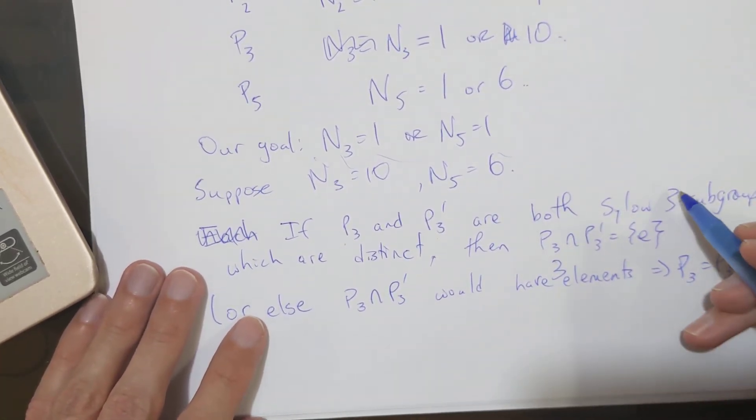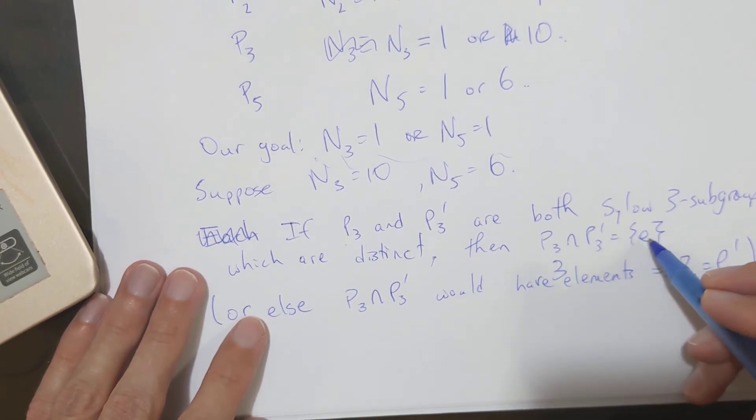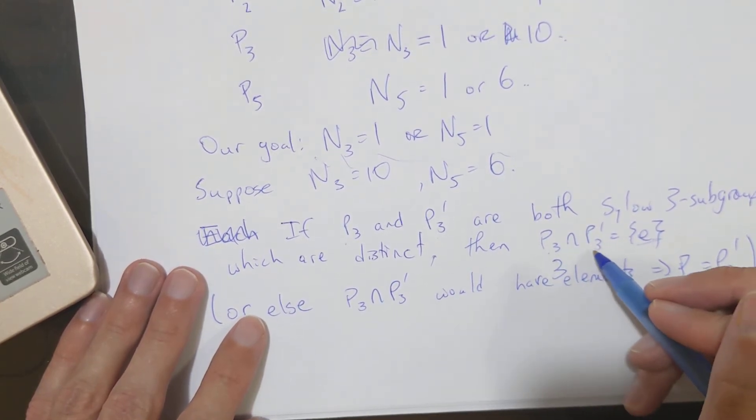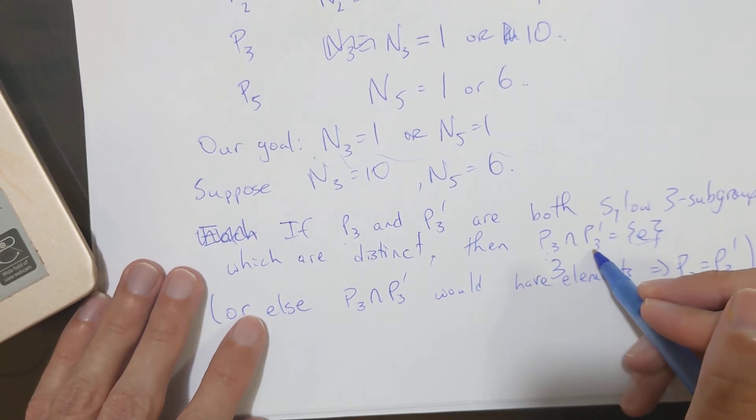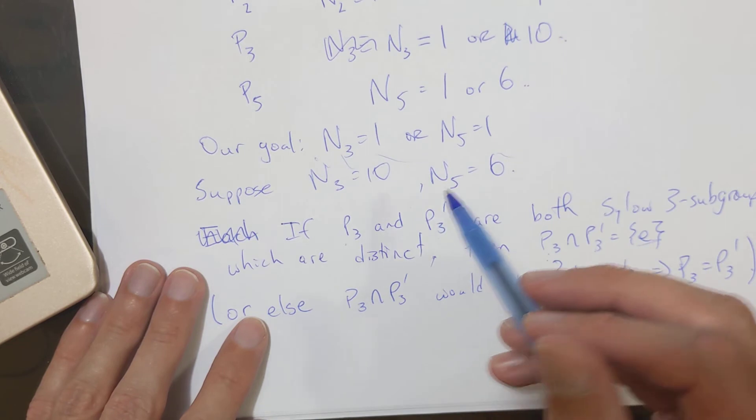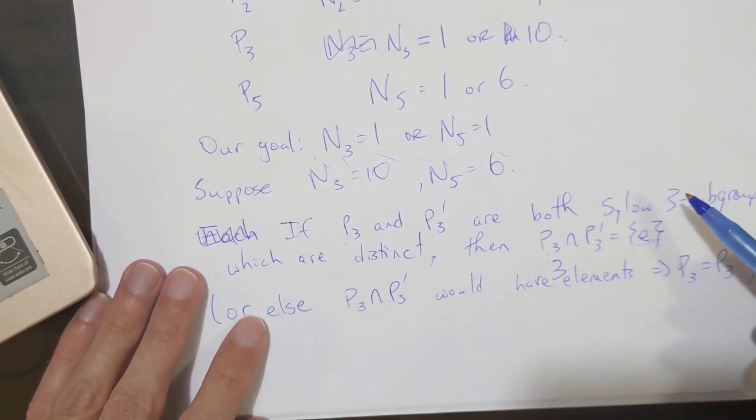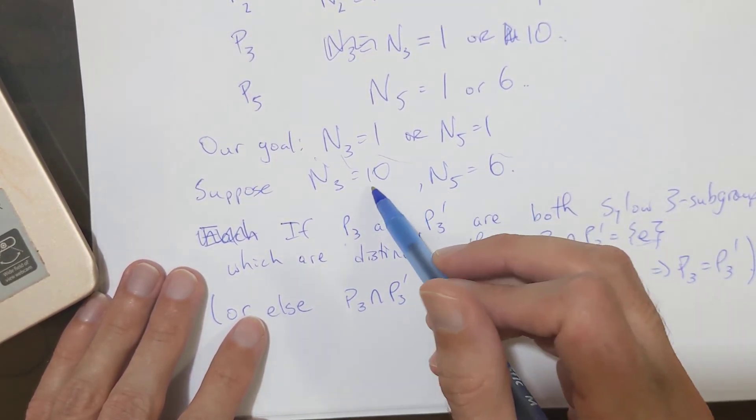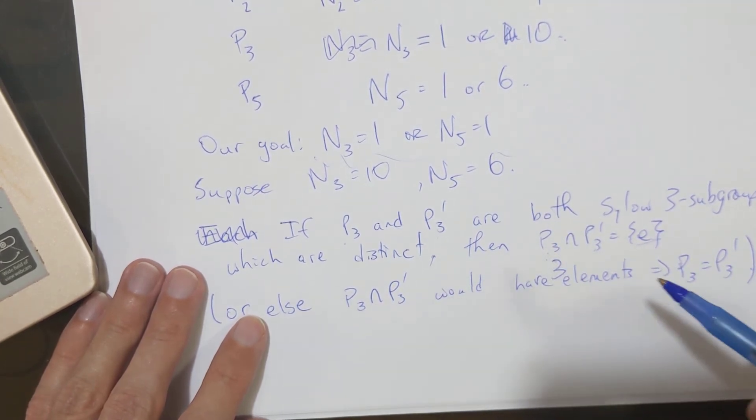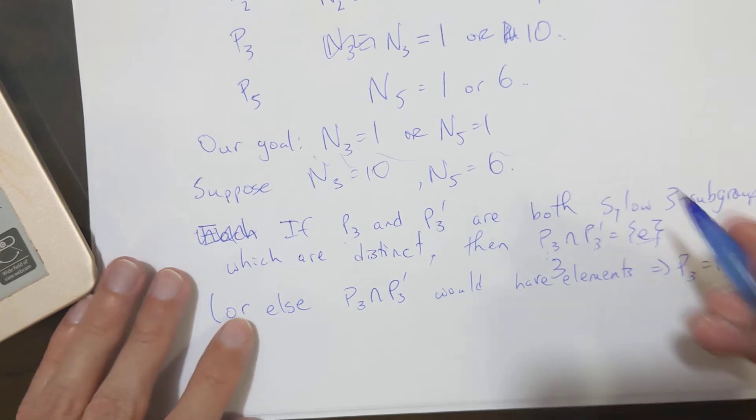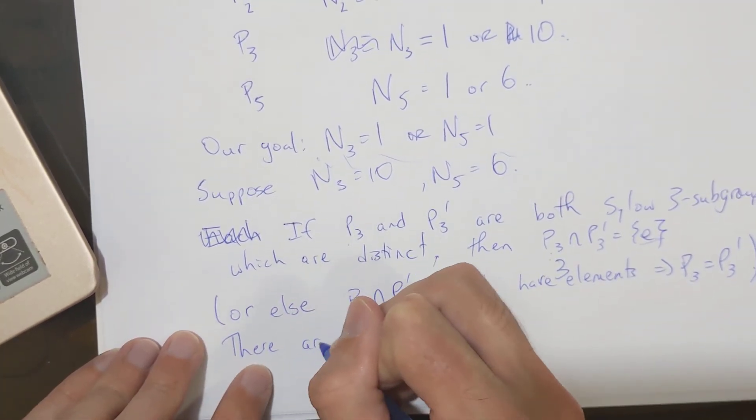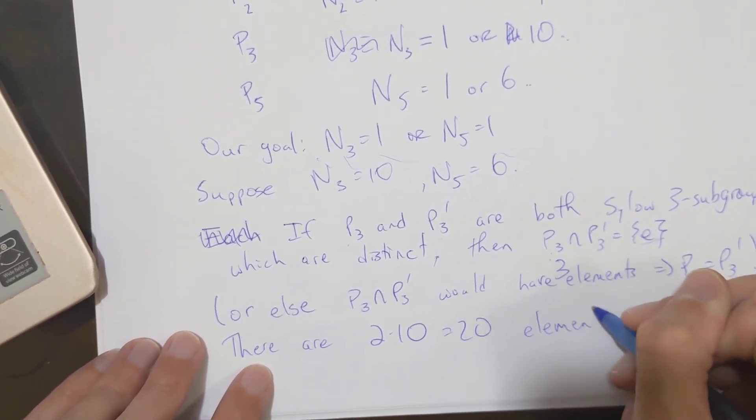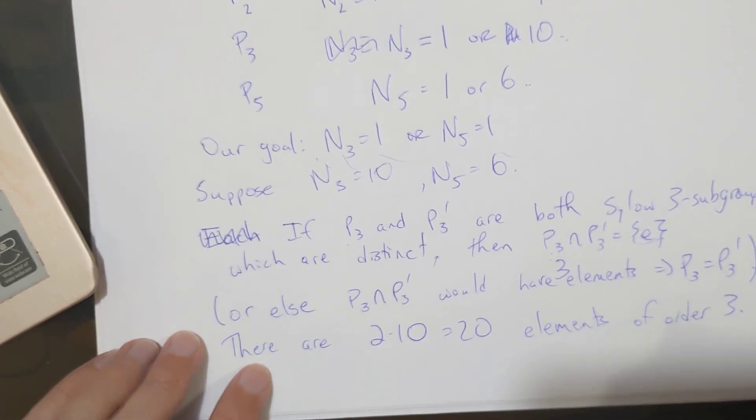Okay. So any two Sylow 3 subgroups, their only point of intersection is the identity. In other words, the two non-identity elements of P3 prime, and so, each of the ten different Sylow 3 subgroups, each of them contains two elements of order three, and adding those all up, we don't double count, so we get 20, two times 10. So in all, there are two times 10 equals 20 elements of order three.